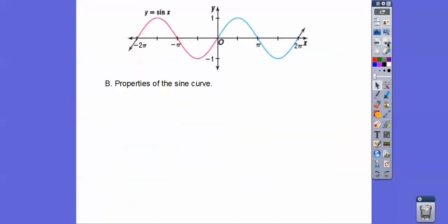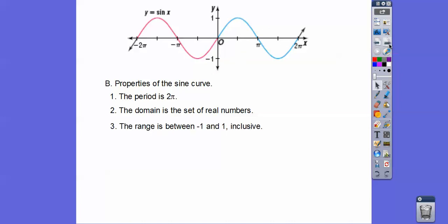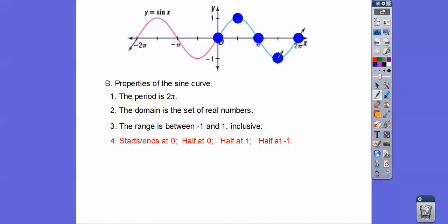So that pattern continues — it's called a period. One period is graphed in the sine wave in 2π radians, and it just keeps continuing for the next 2π and 2π this way. Here are some properties of the sine curve: the period is 2π, so one cycle happens in 2π. The domain is all real numbers — left and right movement. The range is from negative 1 to positive 1. Here's the trick: it starts and ends at 0, halfway at 0, halfway at positive 1, halfway at negative 1.